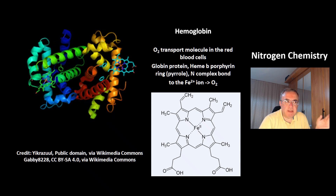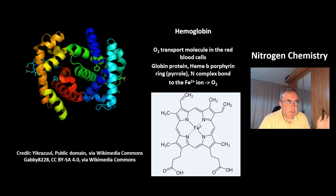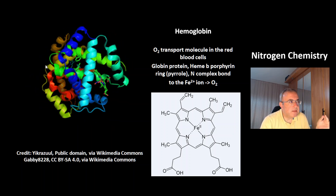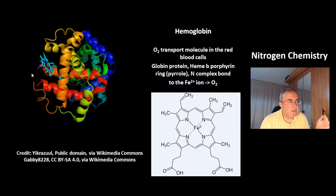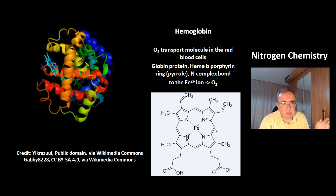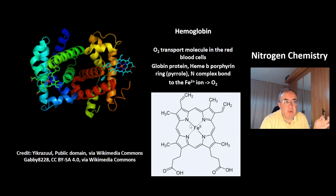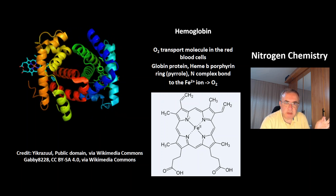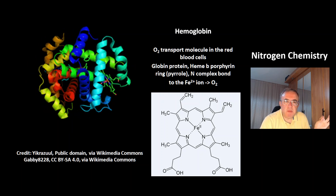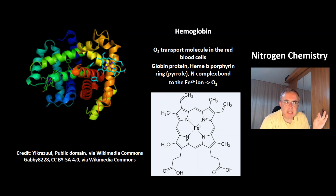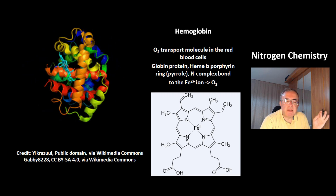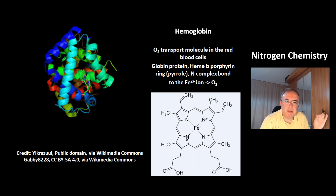This is the molecule hemoglobin. It has two components: the component with the spiral structure is the globin protein, and the other structure is heme B — the porphyrin ring. It has pyrrole rings, which are pentagons with one nitrogen atom in the ring. In the center there is an iron(II) ion, which is bound by a coordinate bond with the nitrogen atoms. The oxygen molecule connects to the iron(II) ion, and that's how it is transported in the human body.